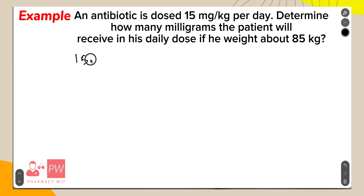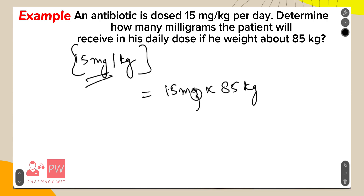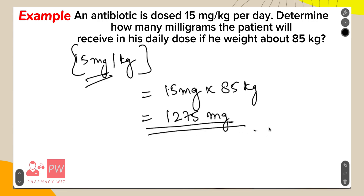This 15 mg is per kg — it is for 1 kg of the dose. We have to calculate the dose according to the patient's body weight, which is 85 kg. So 15 mg multiplied by 85 kg gives us 1275 mg. This is the amount of drug given for an 85 kg patient.